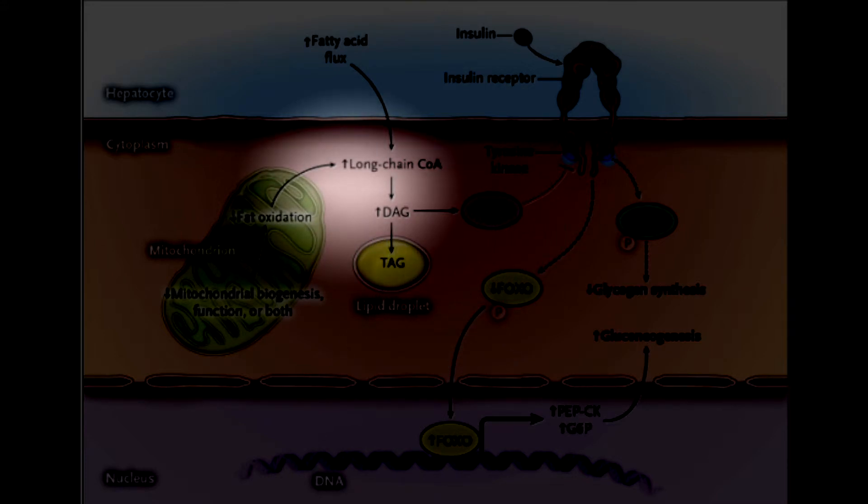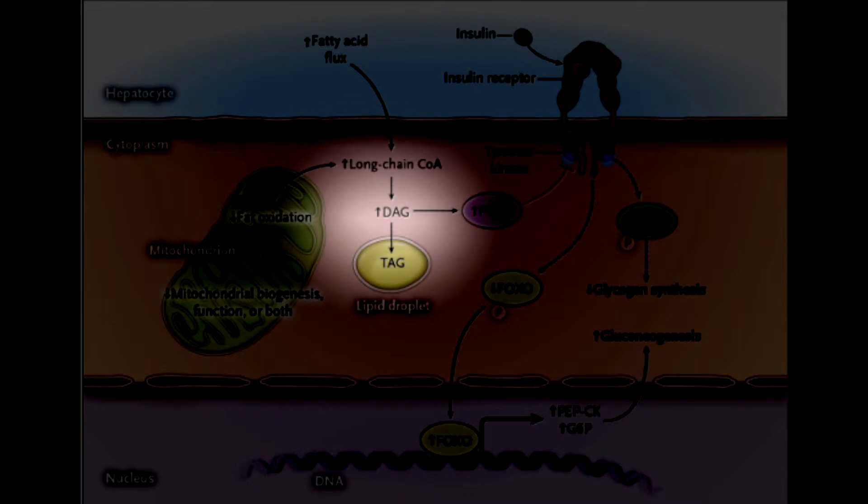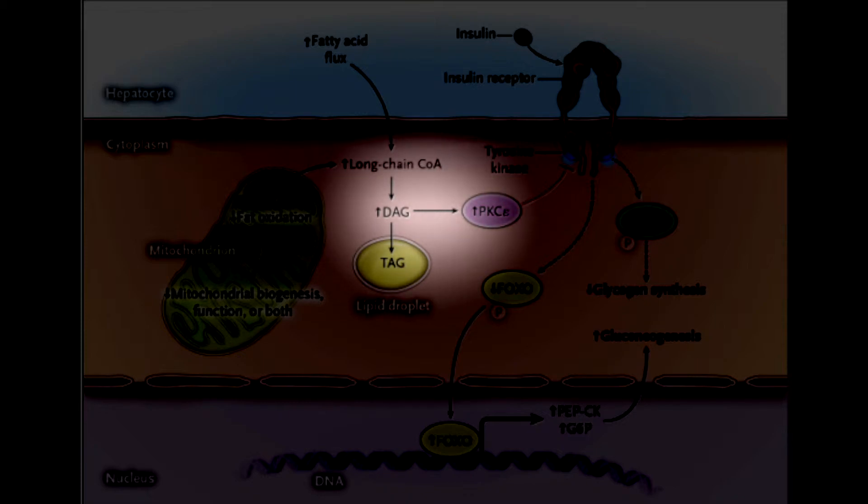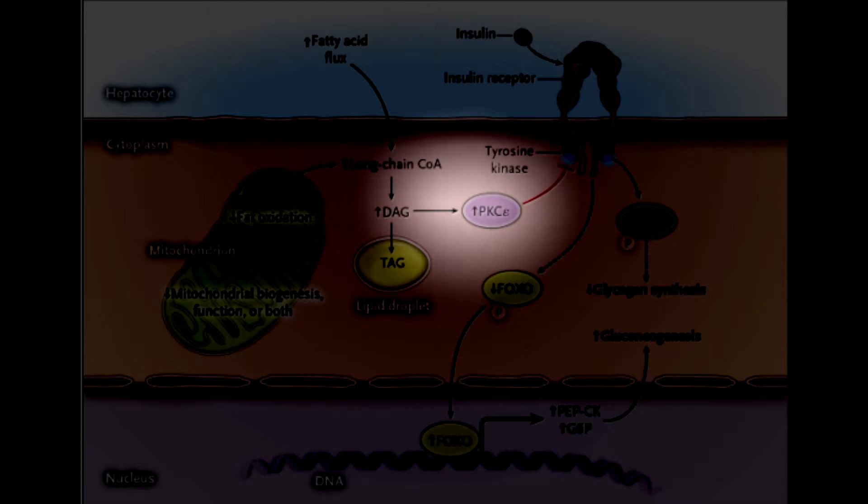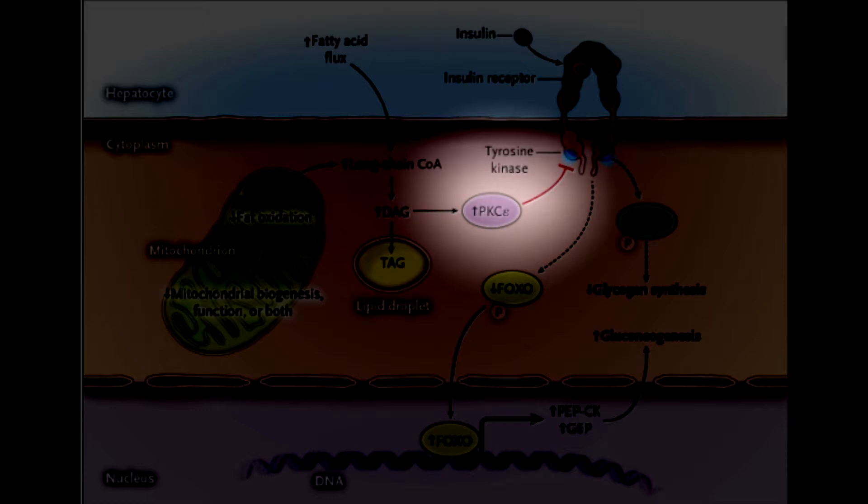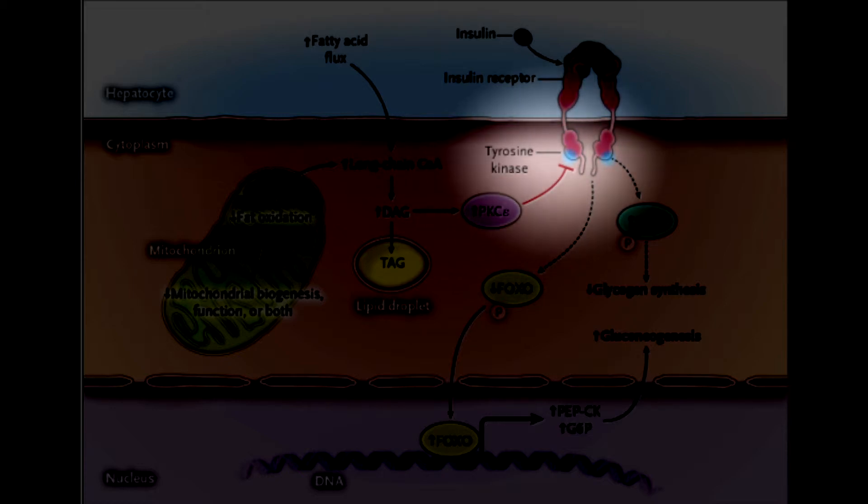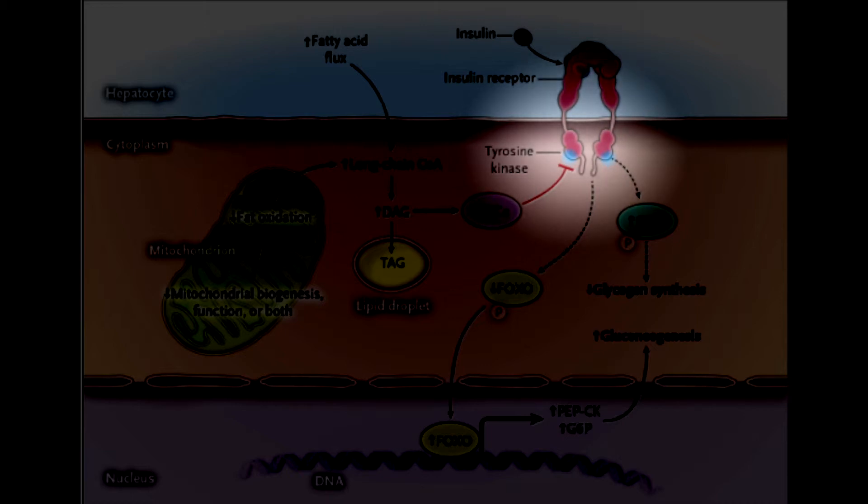This leads to a domino effect where there are increased diacylglycerides and triacylglycerides. These are chemically related to triglycerides. That's why if somebody has elevated triglycerides, this often means there are these intermediate accumulations of these downstream products of free fatty acid flux into the cells. This affects phosphokinase C epsilon, which turns off the tyrosine kinase portion of the insulin receptor.